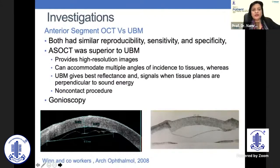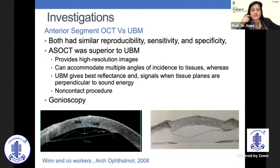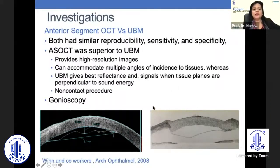You can do anterior segment OCT and UBM. Both have similar reproducibility, sensitivity, and specificity, but ASOCT is superior to UBM because it provides higher resolution images and can accommodate multiple angles of incidence to tissues, whereas UBM will only take those perpendicular to the sound energy. More importantly, it is a non-contact procedure. This is what you would see on ASOCT and this is what you would see on UBM.